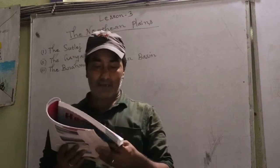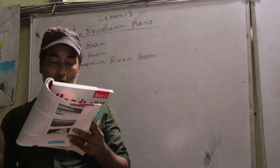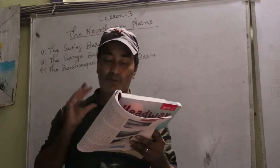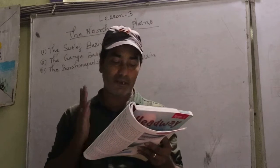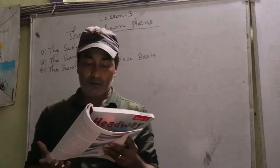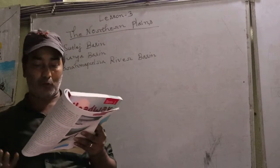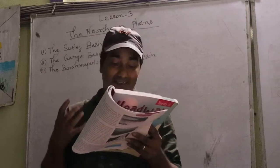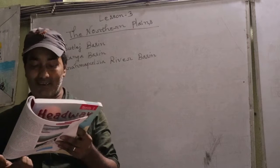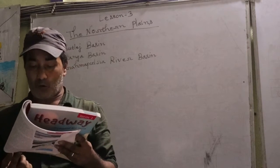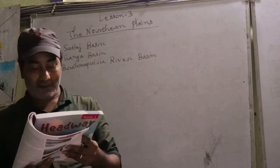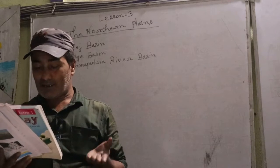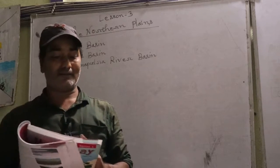Many rivers originate in the Himalayas and flow through the Northern Plains. As a result, these Plains are formed by the fine silt or alluvium brought down by the rivers. That is why this soil is very fertile, and that is why this region is known as the Northern Plains.